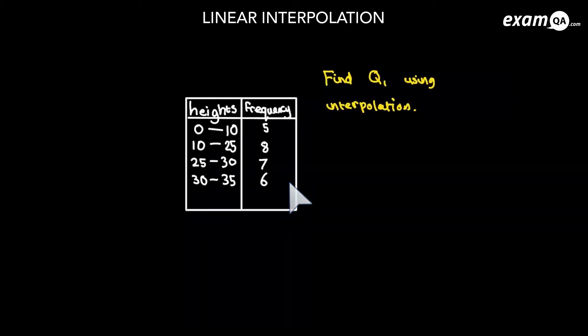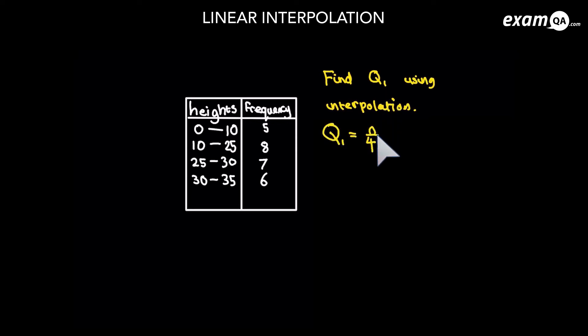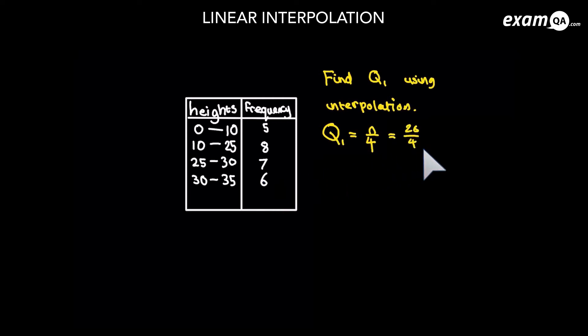So in this question, we need to find out Q1, which is the lower quartile. You should know to search for the lower quartile, we do n over 4 — n being the frequency. The total frequency here is 26, because 5 plus 8 plus 7 plus 6 gives us 26. So it's 26 over 4, and that gives us 6.5.